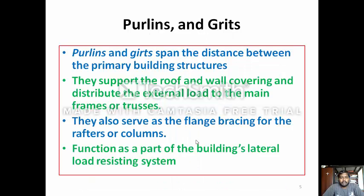Next are Purlins and Girts. Purlins and Girts span the distance between the primary building structures. They support the roof and wall covering and distribute the external load to the main frame of the trusses. They also serve as flange bracing for the rafter or column, and function as part of the building's lateral load resistance system.